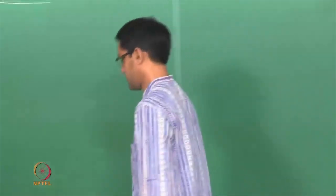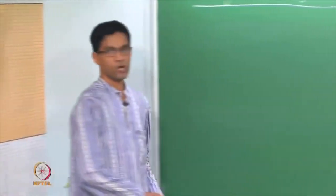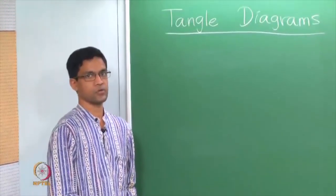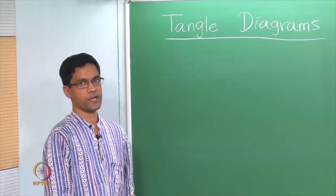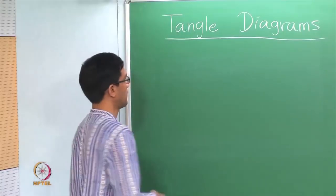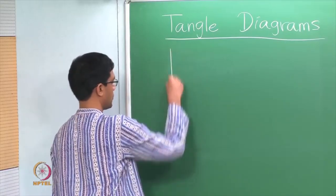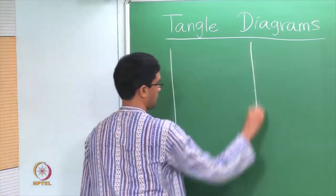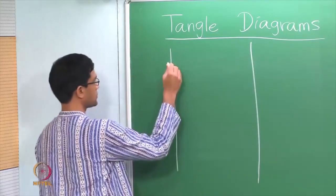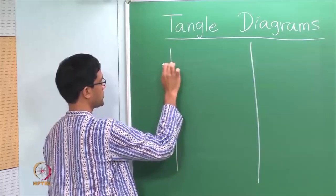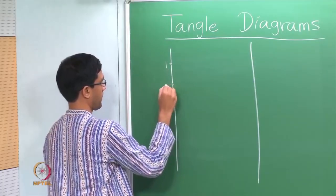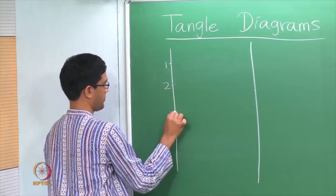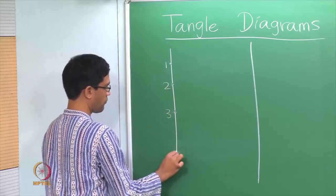Hey, welcome back. Today we will talk about triangle diagrams. This is just the terminology that is sometimes used to describe the picture that we have been drawing for a permutation. Here is roughly what we have been doing. If we want to depict a permutation, say we are looking at a permutation of 4.